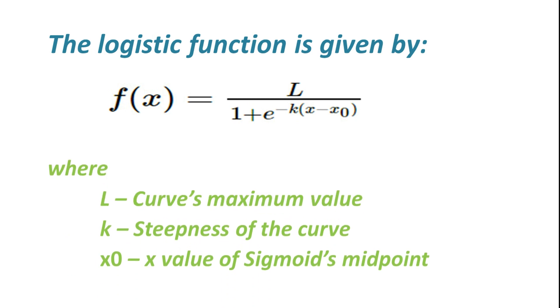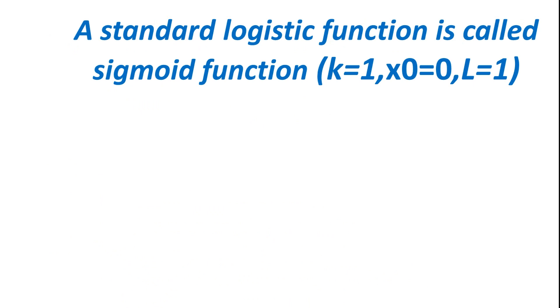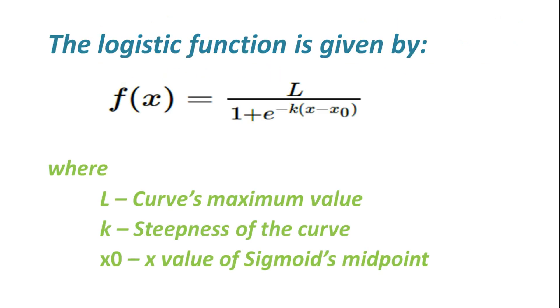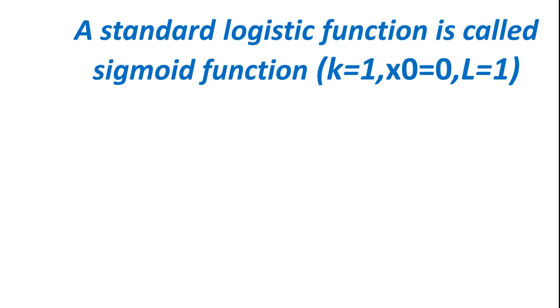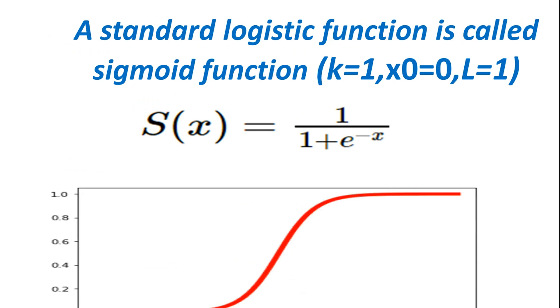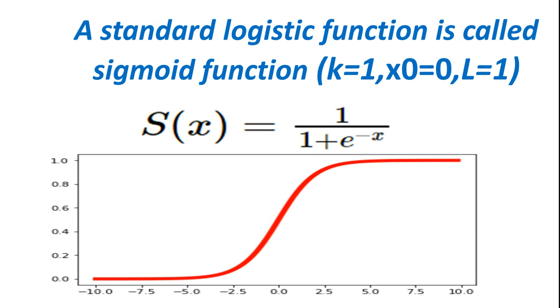I am interested in a specific form of logistic function called the sigmoid function where the value of k is equal to 1, x0 is equal to 0, and L is equal to 1. If we substitute these values, the equation then becomes S(x) = 1 / (1 + e^(-x)). And the logistic curve will look like this.